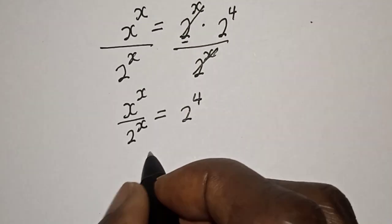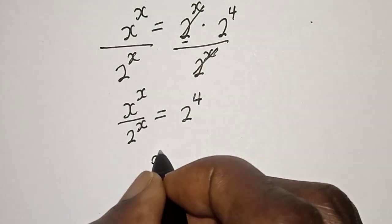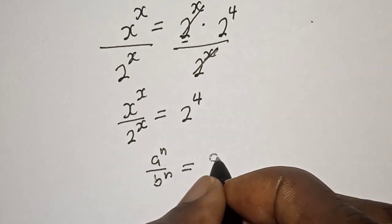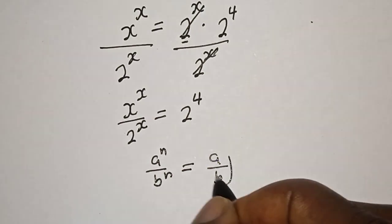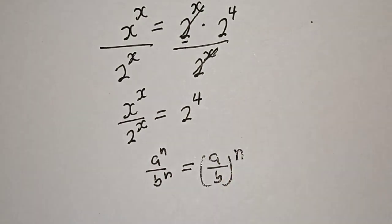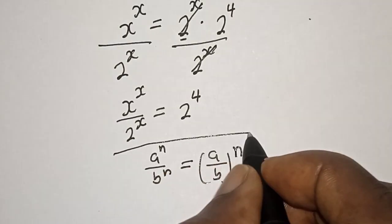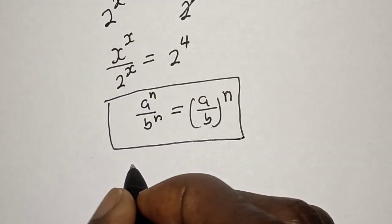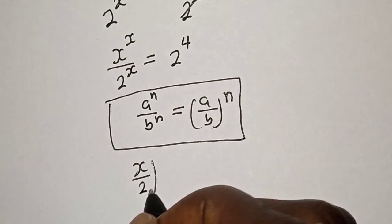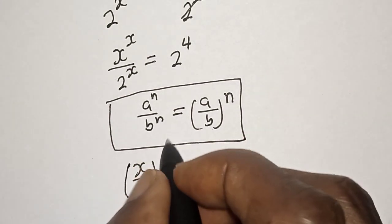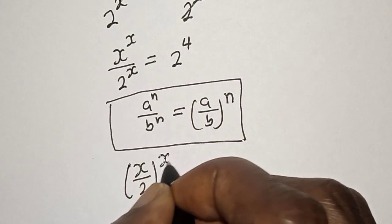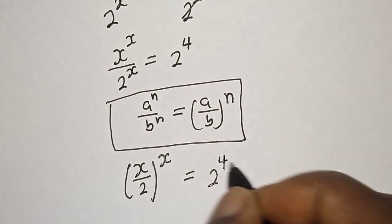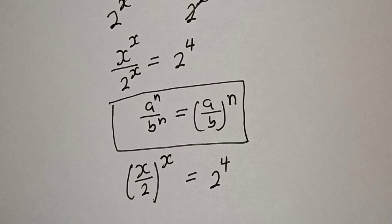Take note of this rule: if you have a raised to power n over b raised to power n, this is equal to a over b to the power of n. Applying this, s over 2 raised to power s is equal to 2 raised to power 4.